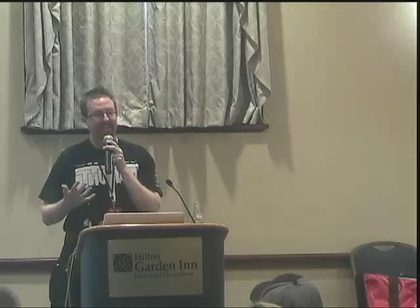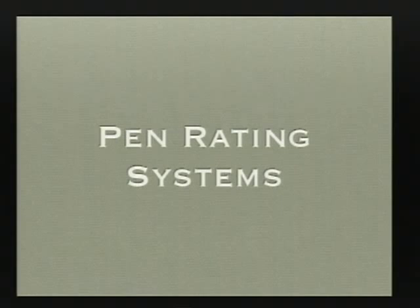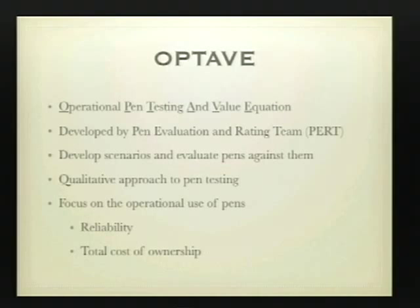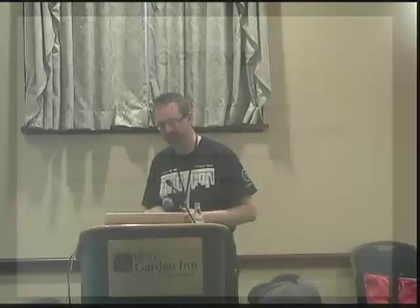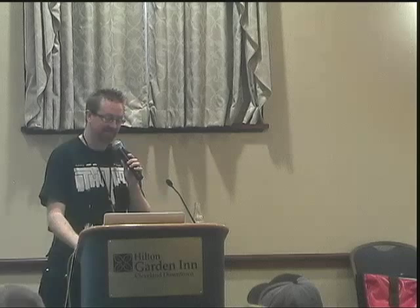We'll now move into pen rating systems — systems you can use to rate pens as you work on them. The first one is Optave: the Operational Pen Testing and Value Equation. It was developed by PERT, the Pen Evaluation and Rating Team out of Pittsburgh. In this system, you develop scenarios and then evaluate the pens against them. It's a qualitative approach to pen testing, really focused on the operational values of pens such as reliability and total cost of ownership. Of course, there's also the PEAR model — the Pen and Ink Rating System. The big thing PEAR introduces is the ability to rate the pen and ink together, since those are critical items.